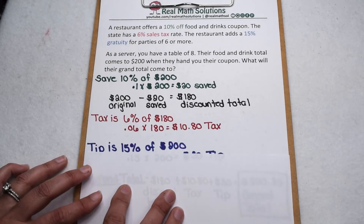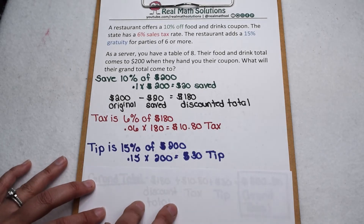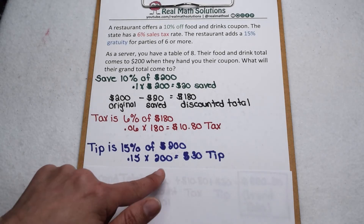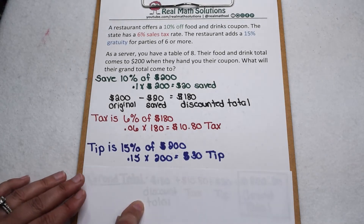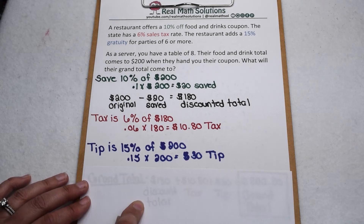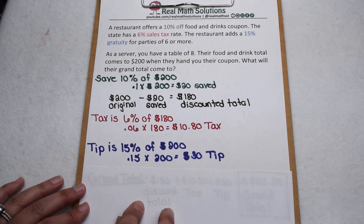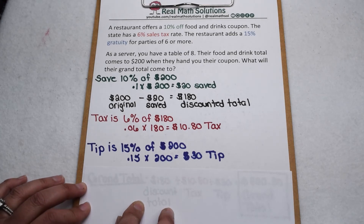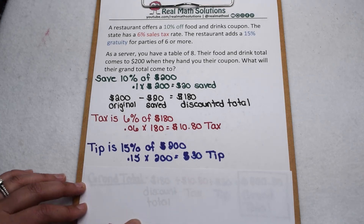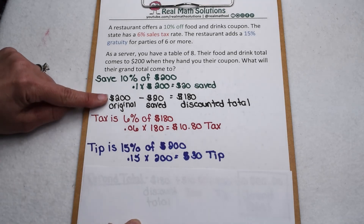When we go to leave the tip, we want to go back to that $200 total. It is customary to leave tips on the original amount before the discount. So 15% as a decimal times $200 comes out to be a $30 tip.